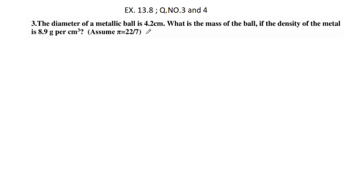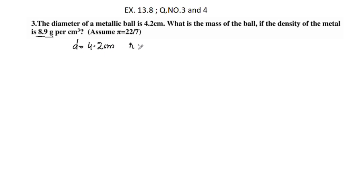The diameter of a metallic ball is 4.2 centimeters. What is the mass of the ball if the density of the metal is 8.9 grams per centimeter cube? The mass of the ball is volume into density. The diameter is 4.2 centimeters, so the radius is 4.2 divided by 2, which equals 2.1 centimeters.